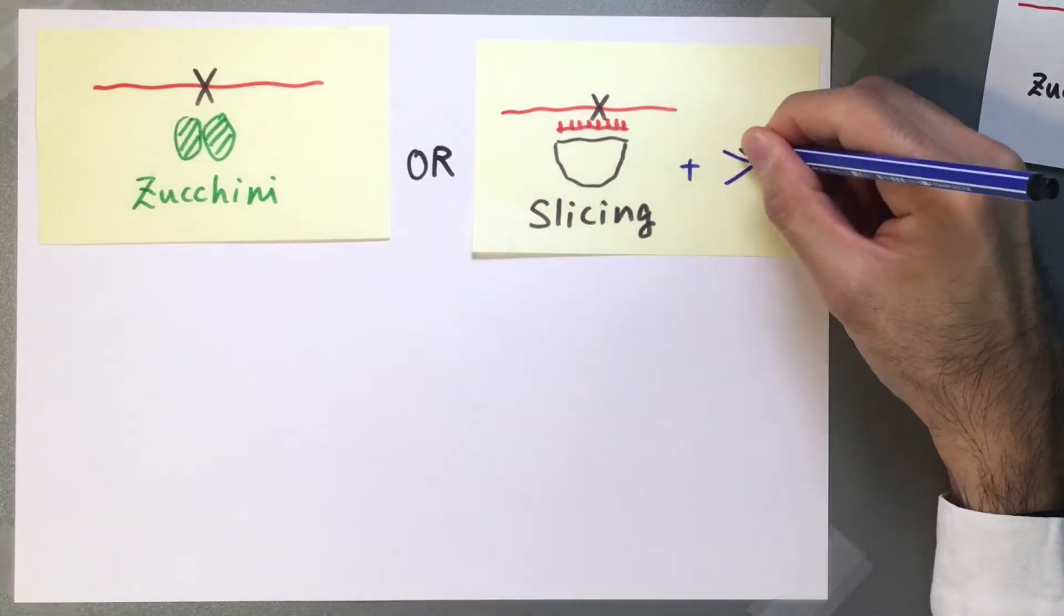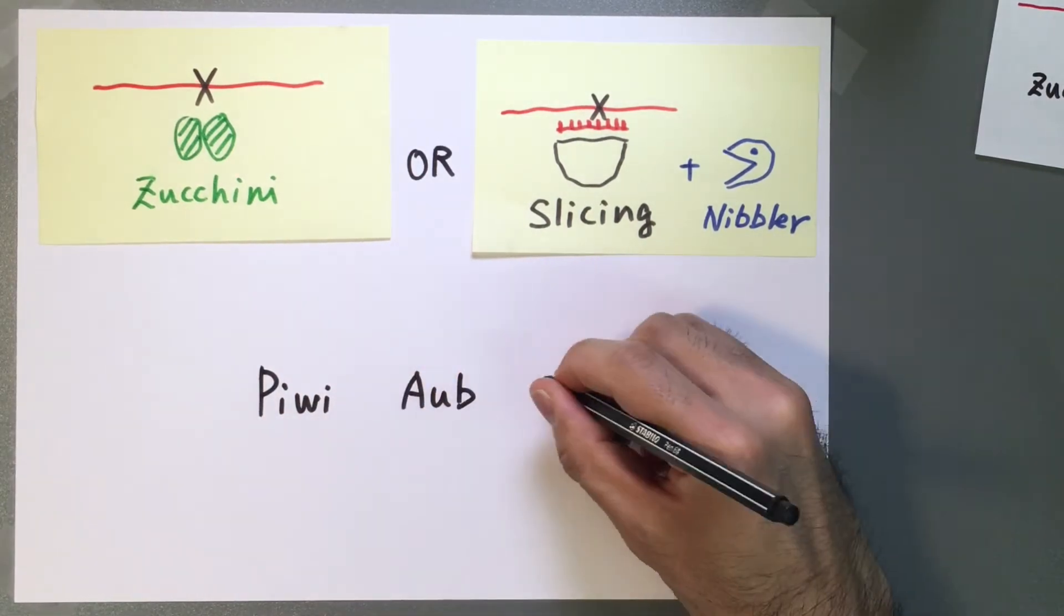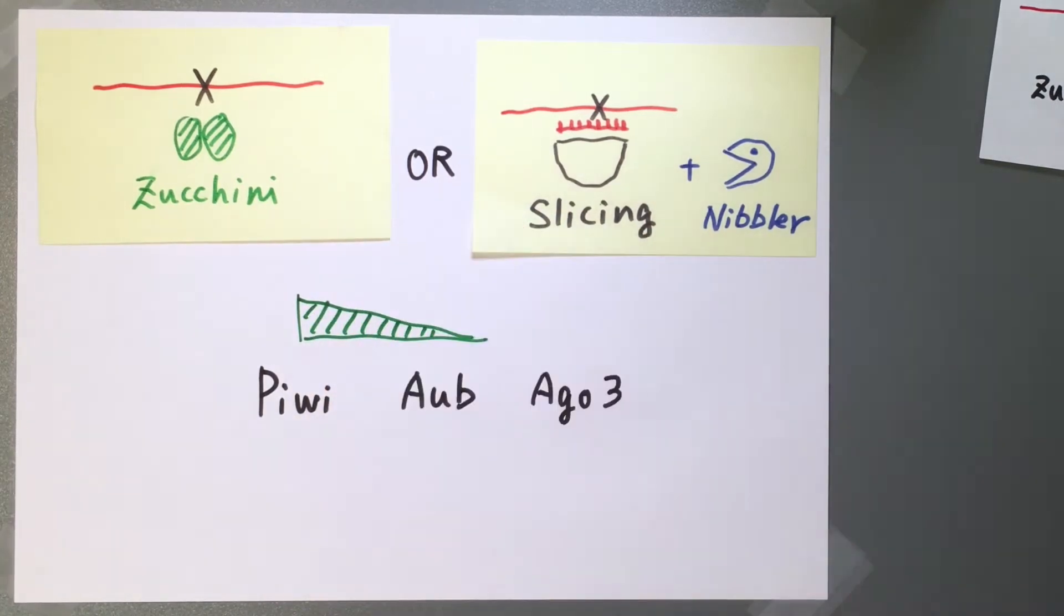The different biogenesis pathways contribute to different extents to the formation of piRNAs loaded into the three argonaute proteins. Zucchini-mediated 3' end formation dominates for Piwi,